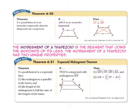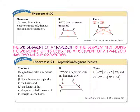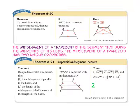In Theorem 6-20, if a quadrilateral is an isosceles trapezoid, then its diagonals are congruent. So segment AC is congruent to segment BD, because trapezoid ABCD is an isosceles trapezoid. The mid-segment of a trapezoid is a segment that joins the midpoints of the trapezoid's legs. It has two unique properties: first, the mid-segment is parallel to both bases; second, the length of the mid-segment is half the sum of the bases. Using multiplication, the equation is 2 times the length of mid-segment MN equals the sum of segment RA and segment TP.